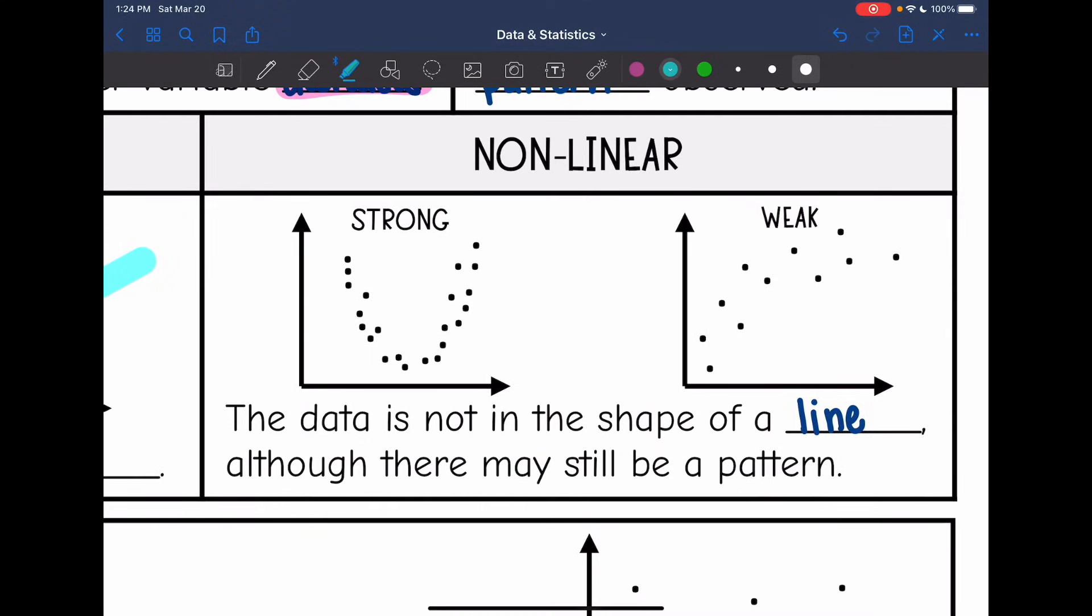Then in these two over here, we have some non-linear patterns. This one's pretty strong because their points are together and we can see that curve. And then this second one, we have a curve here and it would be weak because the points are further apart. So non-linear, the shape is not a line, but there may still be a curved pattern.